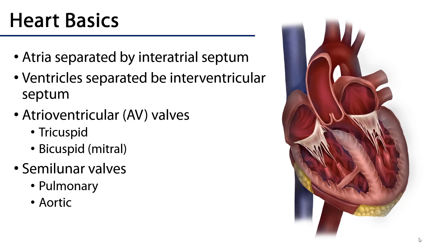Recall that the heart is a four-chambered organ. There are two atria — a right atrium and a left atrium — that are separated by an interatrial septum. There are two ventricles — a right ventricle and a left ventricle — which are separated by an interventricular septum. The atria and the ventricles are separated by atrioventricular valves, which are surrounded by dense connective tissue that really forms the fibrous skeleton of the heart. Sometimes we refer to this as the atrioventricular septum.